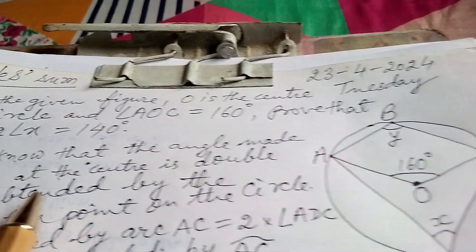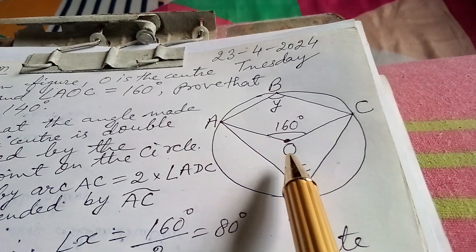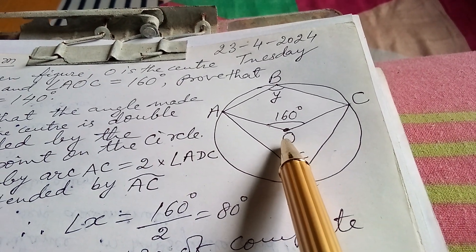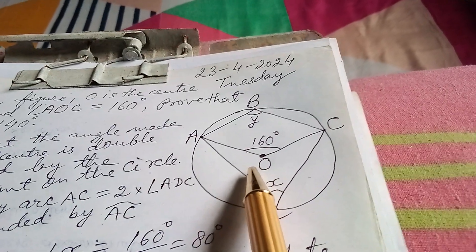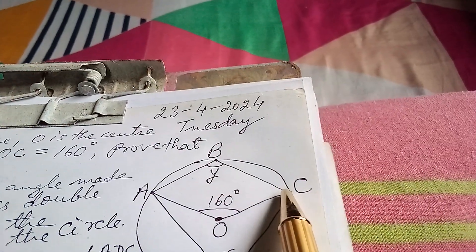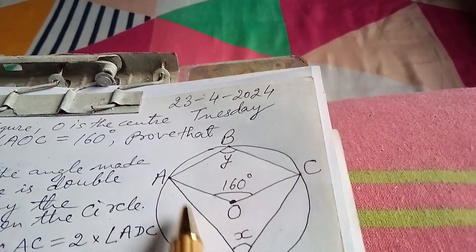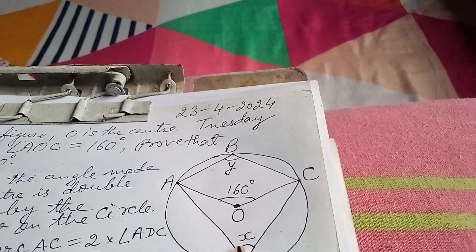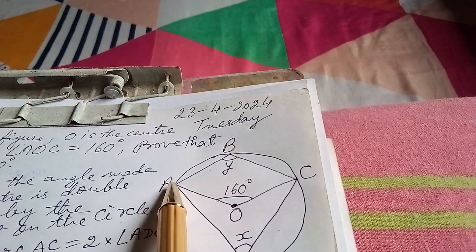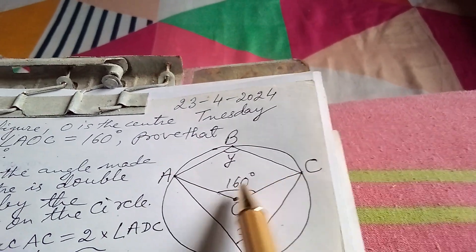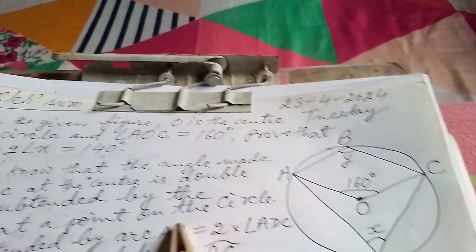Okay, this is the diagram. Here, O is the center. Yes, angle ABC is Y and angle ADC is X and angle AOC is 160 degrees. Now,